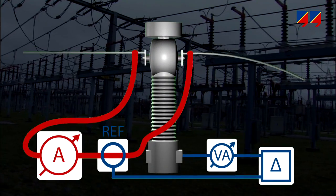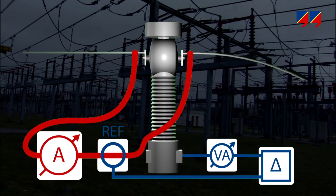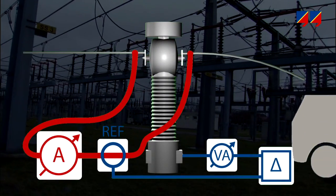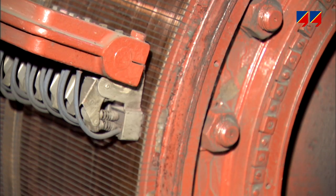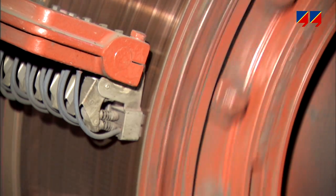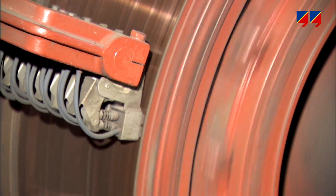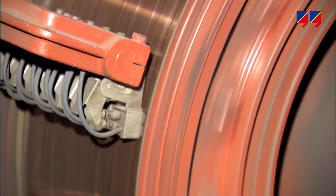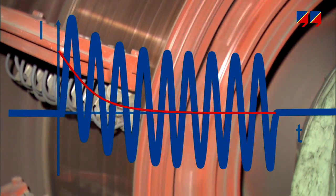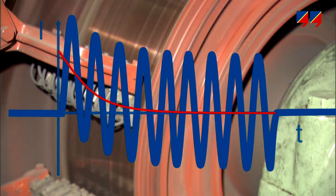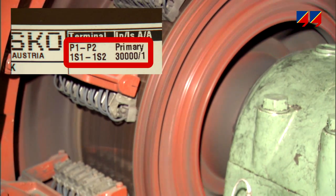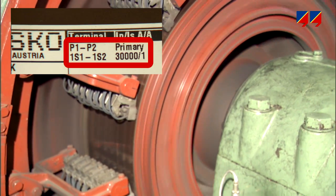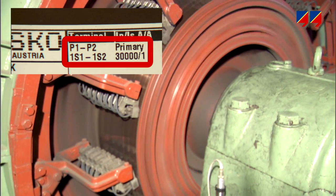This method is costly and laborious, particularly on site, as heavy components need to be shipped and unwieldy cables are required for the current injection. Even this method reaches its limits where protection CTs designed for high short circuit currents, high DC components in the fault current, or high primary time constants are involved. Such CTs require thousands of amps for testing them, exceeding the largest current source's maximum output current.